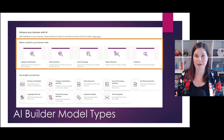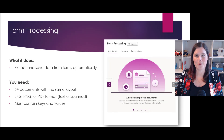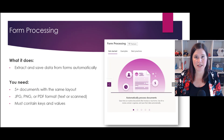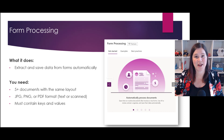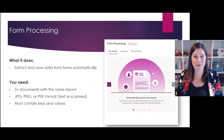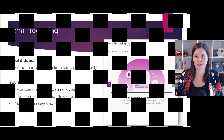First let's run through these five custom models. The form processing model is great for working with paper-based forms or image-based forms — they can come in a photo or PDF format. Let's say you get invoices coming into your organization, or you want to have them come in by email, grab the data off them and put that into a database. That's exactly what the form processing model can do.